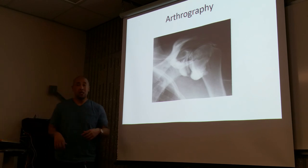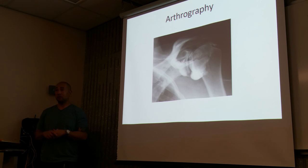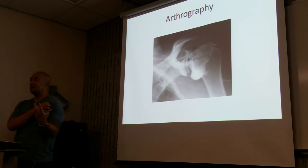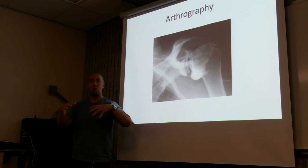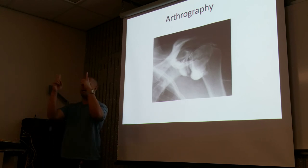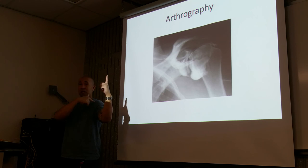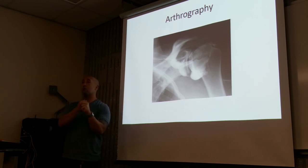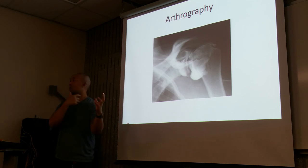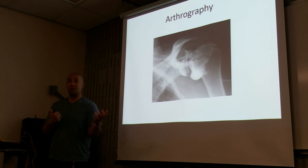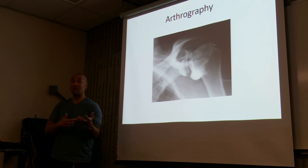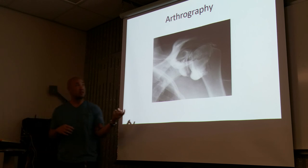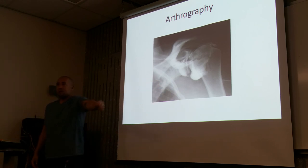Here's an arthrogram of the shoulder. You will be participating in these types of procedures. It's a sterile technique — you prep the site with betadine and drape it with a sterile sheet. The doctor will go in with a long spinal needle into the joint space using fluoroscopy, pull out any synovial fluid from the sac, and replace it with contrast. You remove the fluid first to make room for the contrast and maintain volume within the sac. The doctor then takes pictures in different directions, and you're there to assist.